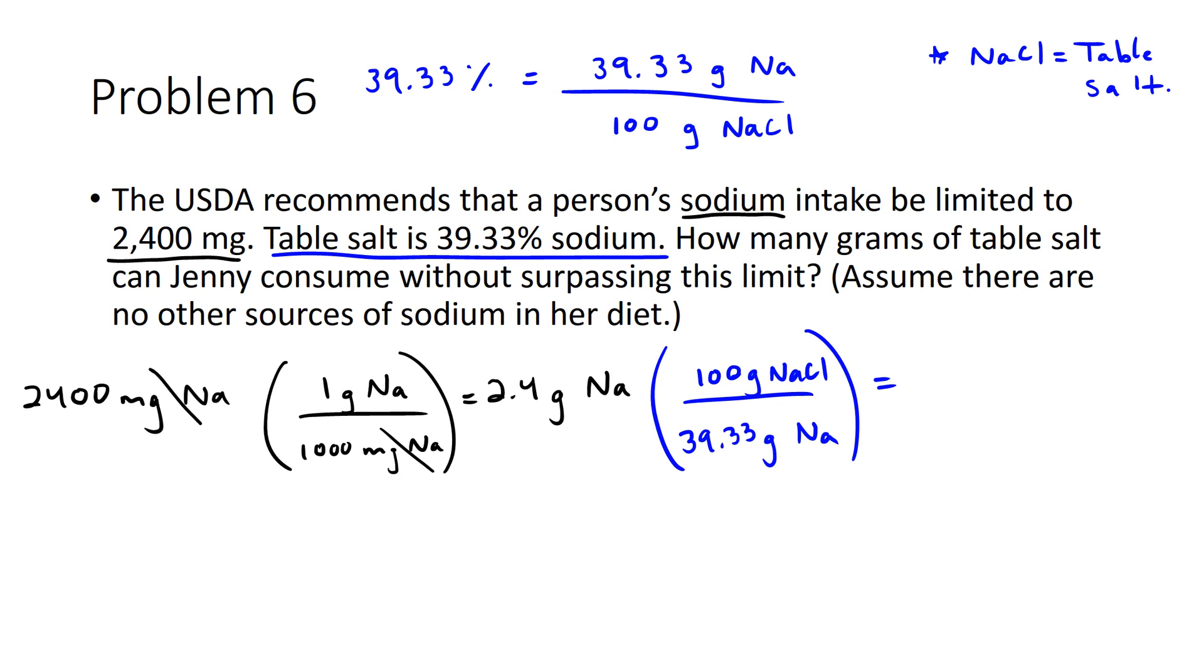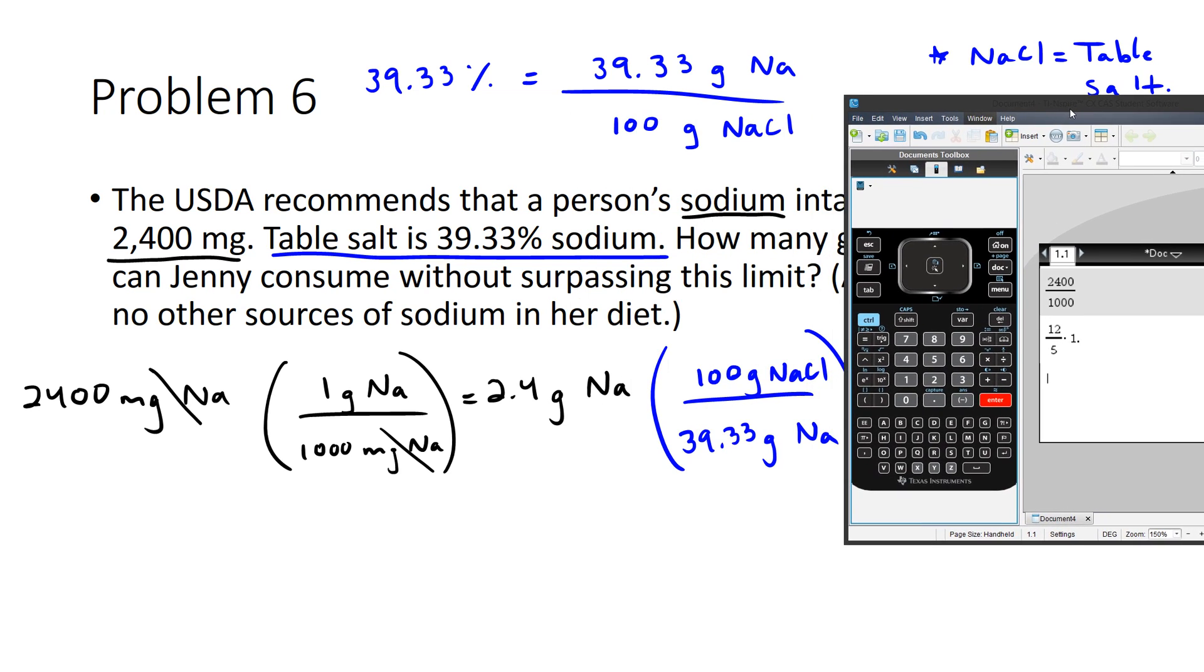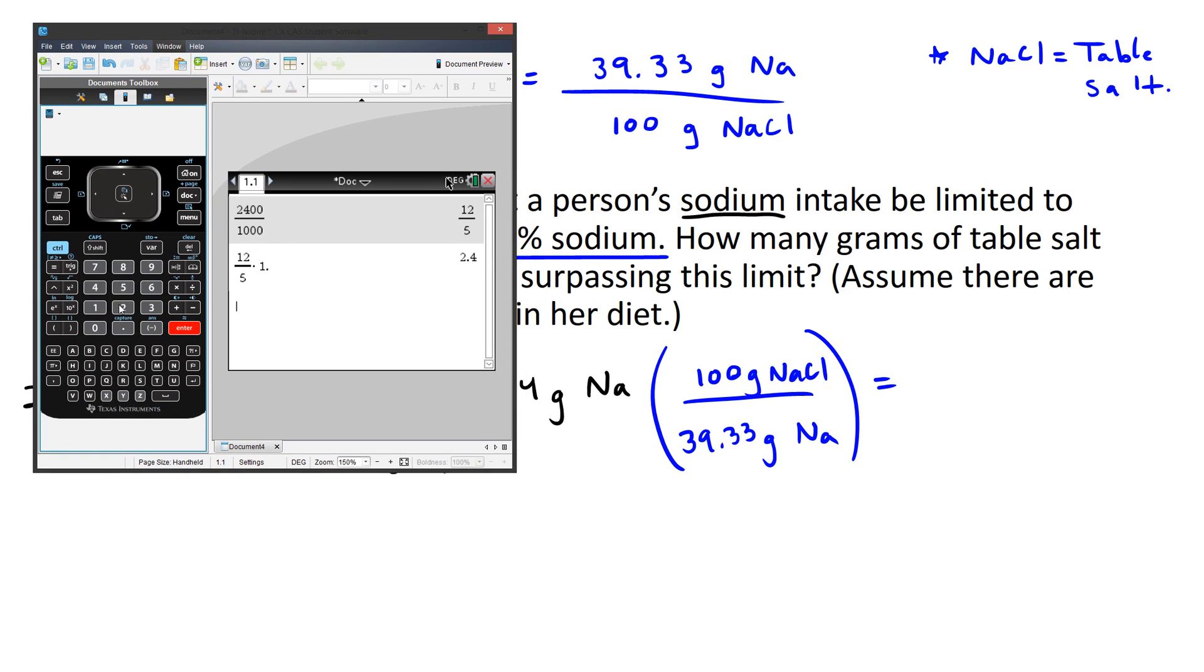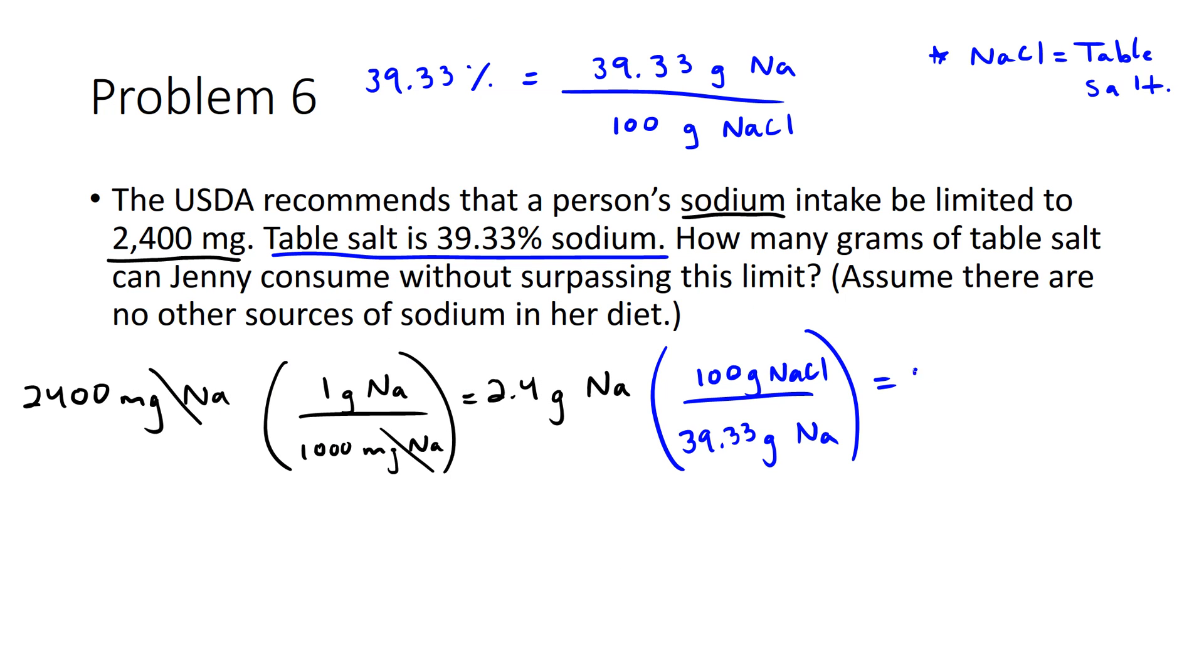So we'll do this calculation. We have 2.4 times 100 divided by 39.33 equals 6.10. I'm just going to say 6.1 grams of NaCl, or you can say 6.1 grams is the amount of table salt that Jenny can consume without surpassing the sodium intake level, and that's how you do problem number six.